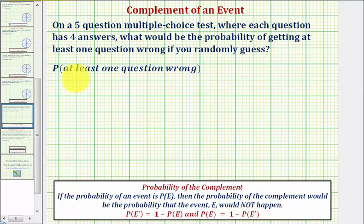So if our event is at least one question wrong, the complement would be not at least one question wrong, which means zero questions wrong. So this probability is equal to one minus the probability of zero wrong. So if we find this probability, we can then find this difference to find the requested probability.